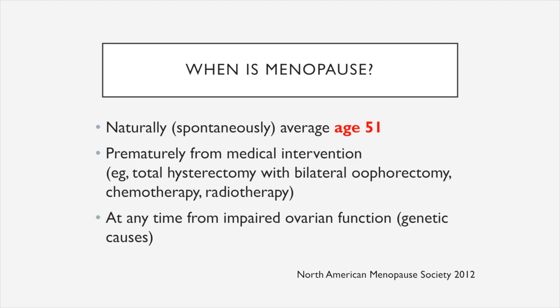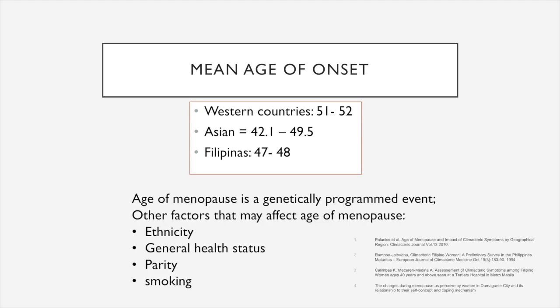When does menopause occur? Naturally, it occurs around the average age of 51 years old. But prematurely, menopause can also happen secondary to medical or surgical interventions, such as when the patient undergoes total hysterectomy with bilateral oophorectomy, or when the patient undergoes chemotherapy or radiotherapy. The mean age of menopause for women from Western countries is around 51 to 52 years old, whereas for Asians, and particularly Filipinas, the mean age of onset is around 47 to 48 years old.